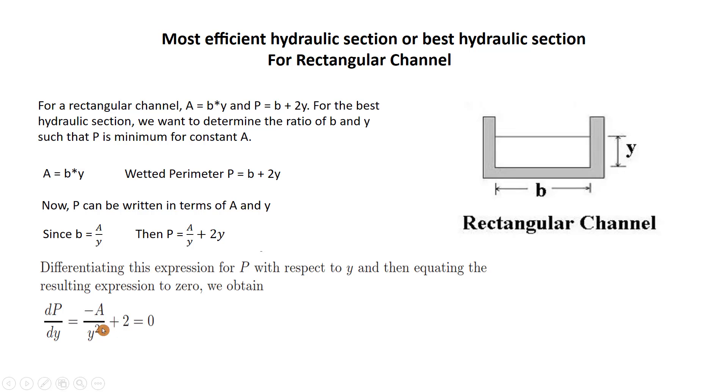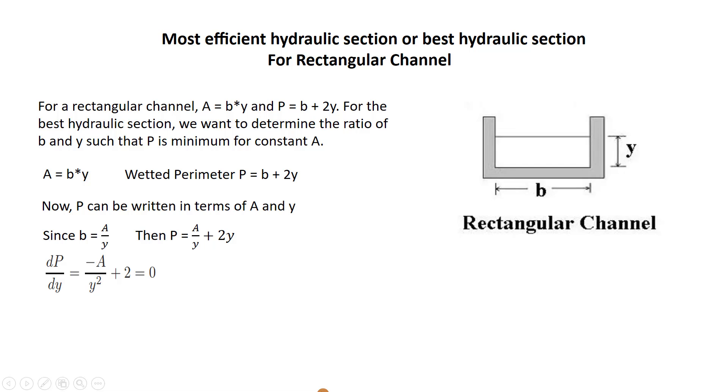But how we get minus A over Y squared? Let us explain it more. A over Y equal to A multiply Y to the power minus one. If we derive A multiply Y to the power minus one, we get minus A multiply Y to the power minus two which equal minus A over Y squared.